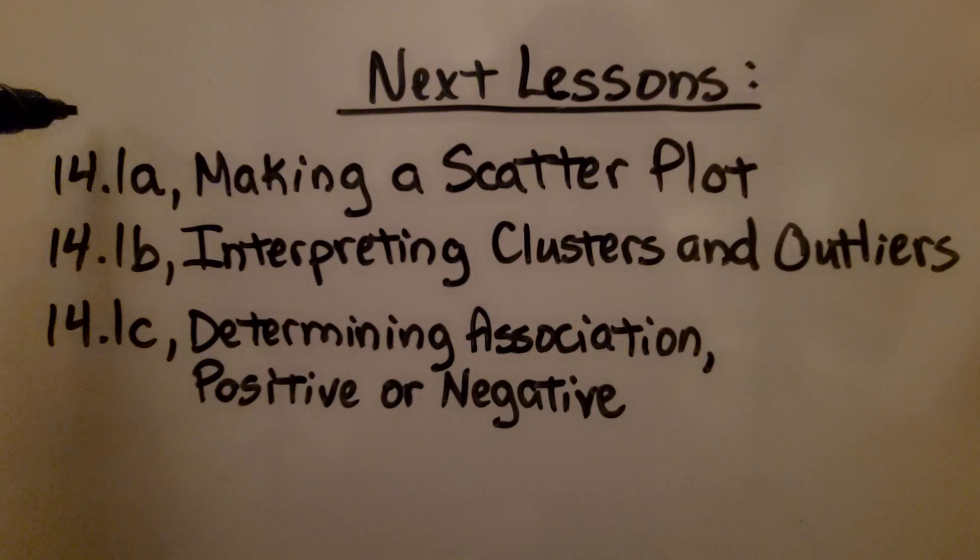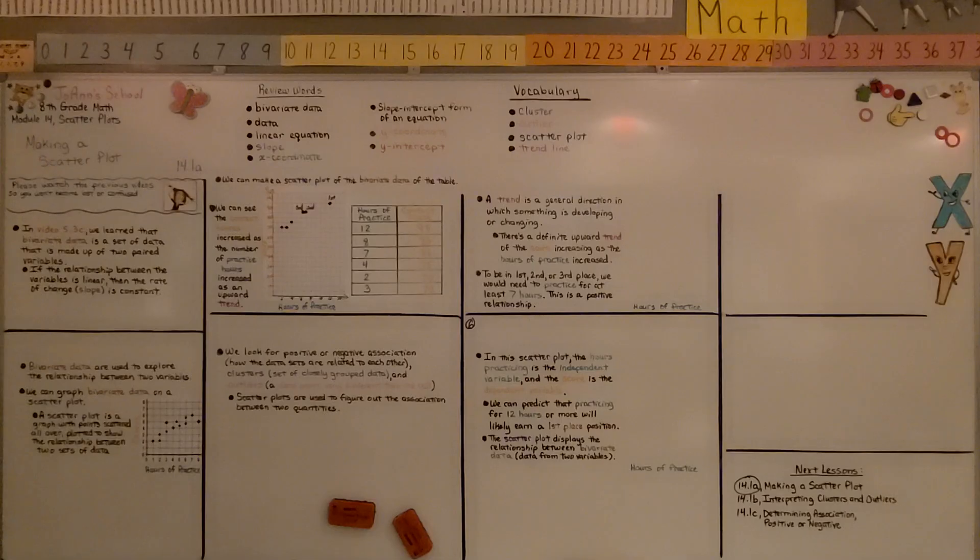We finished the first part of the lesson. We're going to move on to the second part, interpreting clusters and outliers of a scatter plot. The scatter plot displays the relationship between the x and y values. Have a wonderful day. Join me for the next part of the lesson.